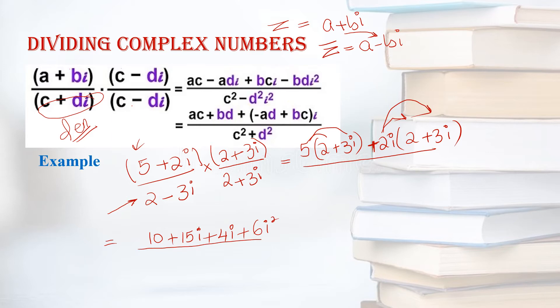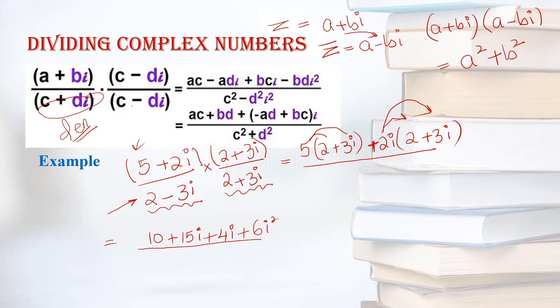Now have a look at the denominator. One is the complex number and one is its conjugate. Remember that if you have (a + bi) times (a - bi), the formula is a² + b². If you have any doubt, you can expand it just like we did in the numerator, but to save time it is better to memorize the formula: (a + bi)(a - bi) = a² + b².